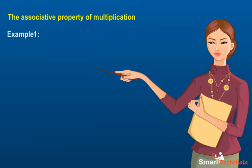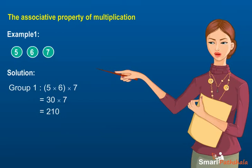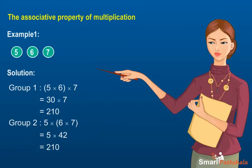Example 1: Explain the associative property of multiplication for the whole numbers 5, 6, and 7. Group 1: (5 × 6) × 7 = 30 × 7 = 210. Group 2: 5 × (6 × 7) = 5 × 42 = 210.